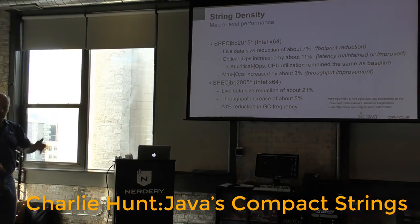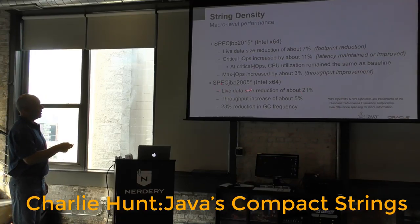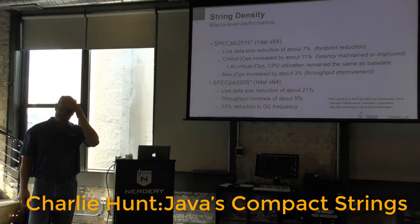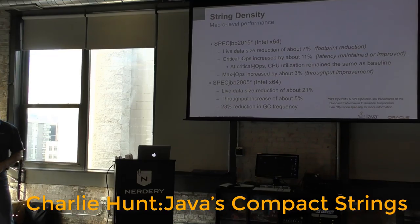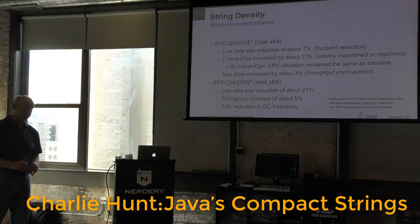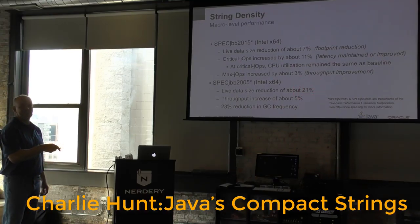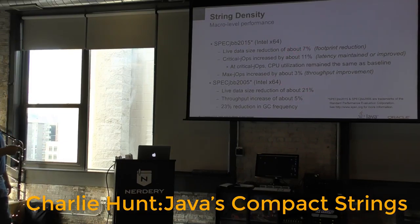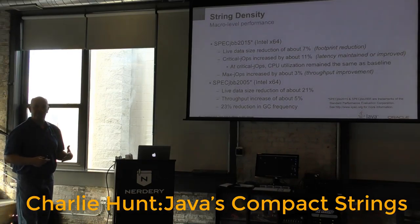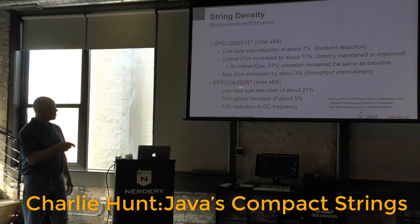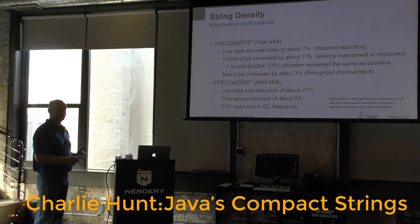On SpecJBB 2005, which only produces a throughput number, live data size reduced by 21%. This benchmark does an enormous number of string allocations — about 55-60% of all objects allocated are string objects. Throughput increased by about 5%, and GC frequency was reduced by 23%. Using the same heap size, GC occurred 23% less often, which translated directly into throughput improvement. Again, we got improvements in footprint, latency, and throughput.